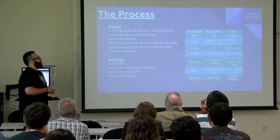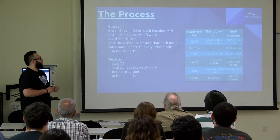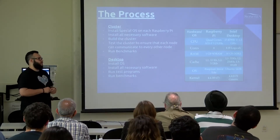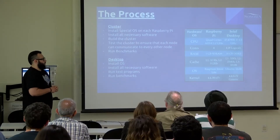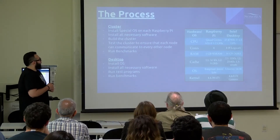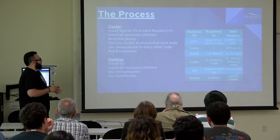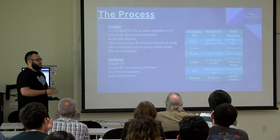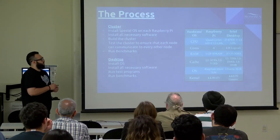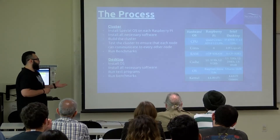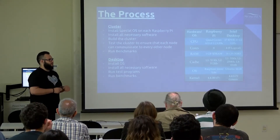Here's the process of how I built the cluster. I had to install a special operating system on every single Raspberry Pi and configure the network to allow them to communicate. I took the Raspbian Jessie Lite operating system and stripped out things we didn't need — the mail client, the internet browser, and some of the GUI — which also helped performance. We installed all the necessary software: the MPI libraries, the GCC compiler, and all the dependencies. I put the cluster together, then tested it to ensure each node could communicate and send information to every other node. Then I ran the benchmarks. Similarly, on the desktop — an Intel i7 — I installed the operating system, installed all necessary software, ran the test programs, and ran the benchmarks. Because the desktop was not a distributed system, I didn't have to do all the network interconnects.